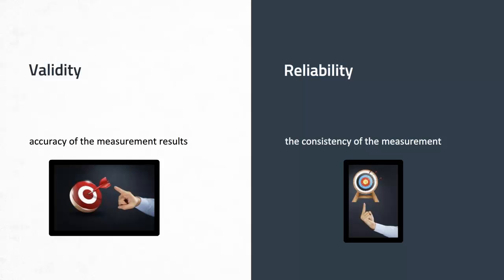Let's begin by defining validity and reliability. It's important you understand these terms before we talk about them in depth, especially in relationship to your instrumentation for your research study. Validity refers to the accuracy of the measurement results — it's the extent to which the instrument measures what it's supposed to measure.